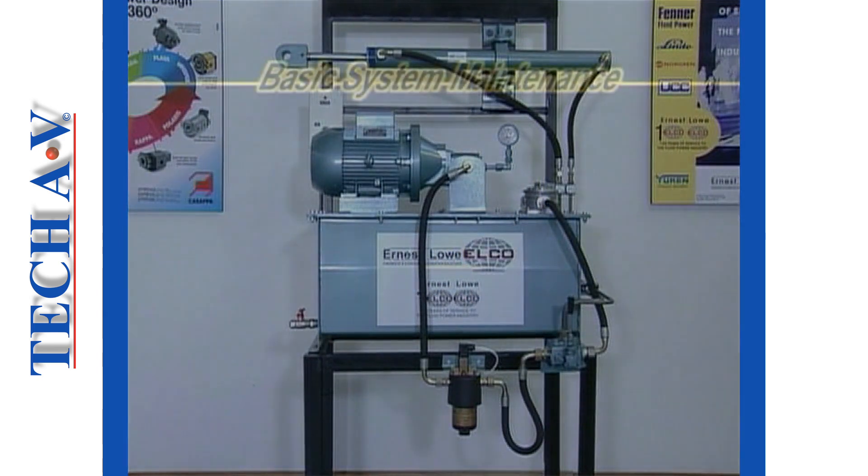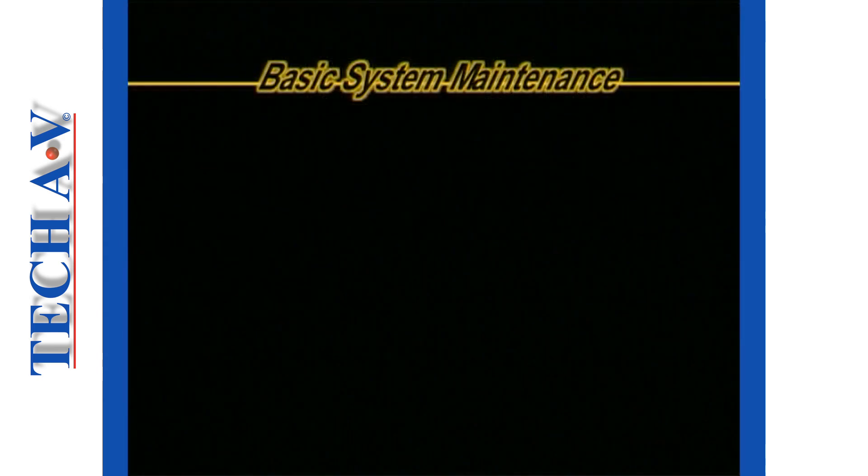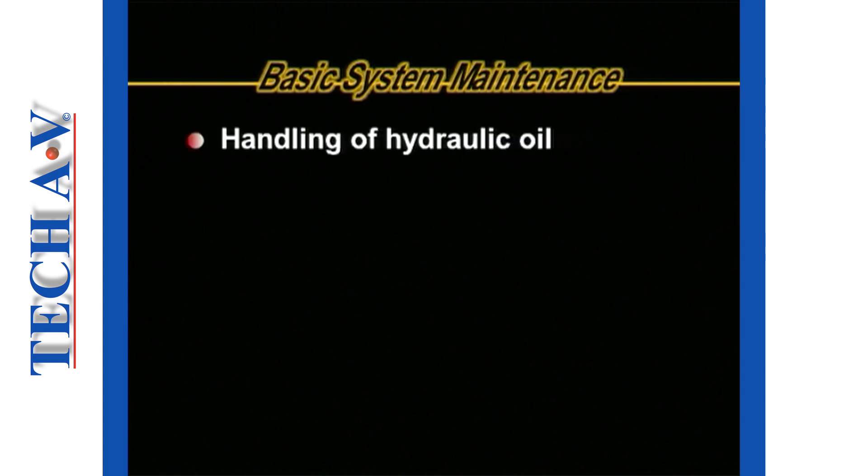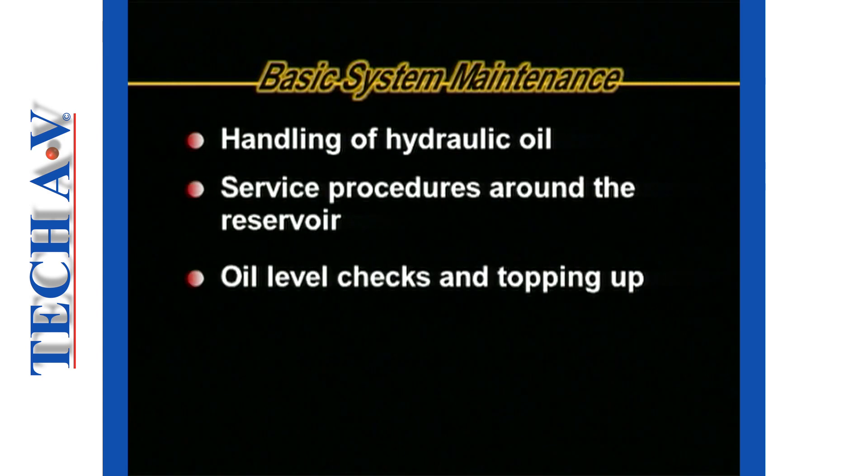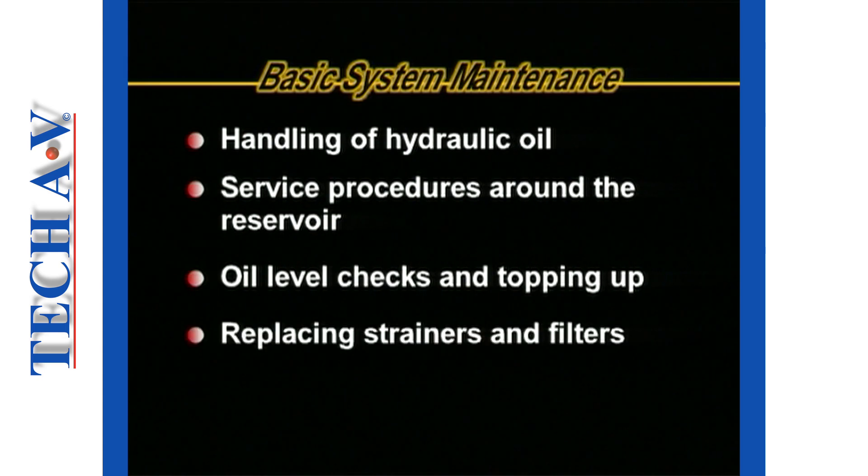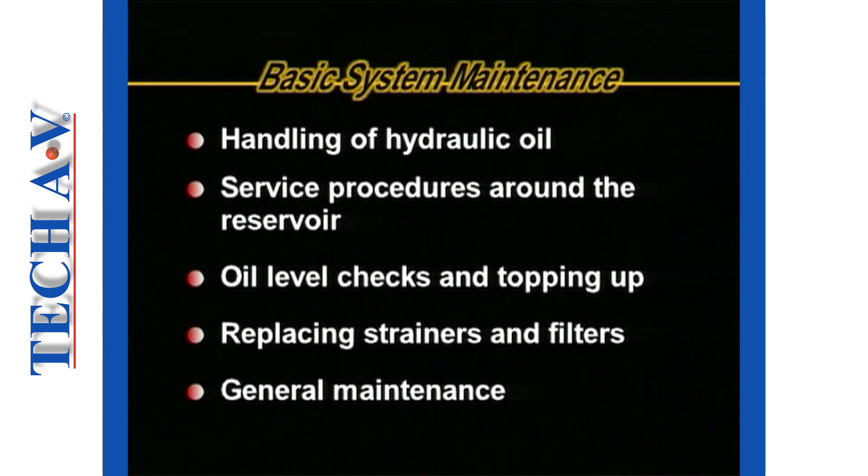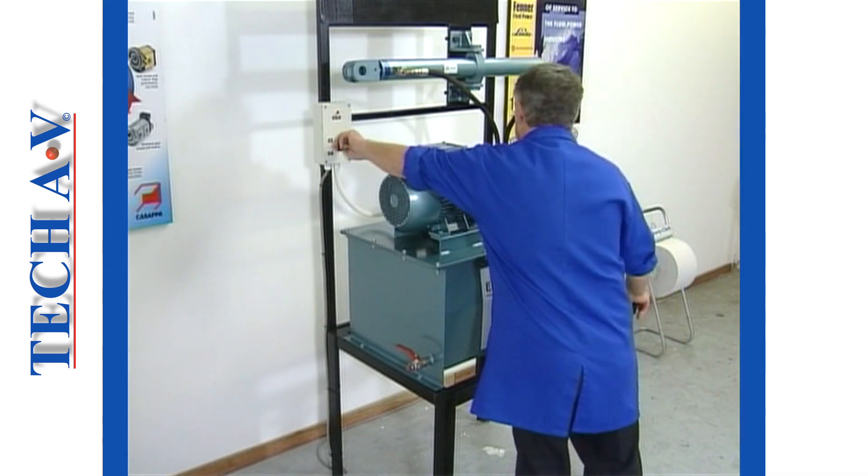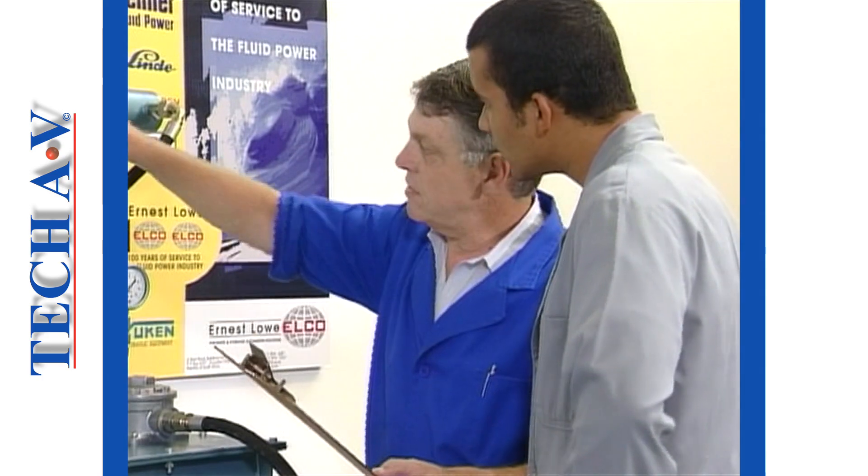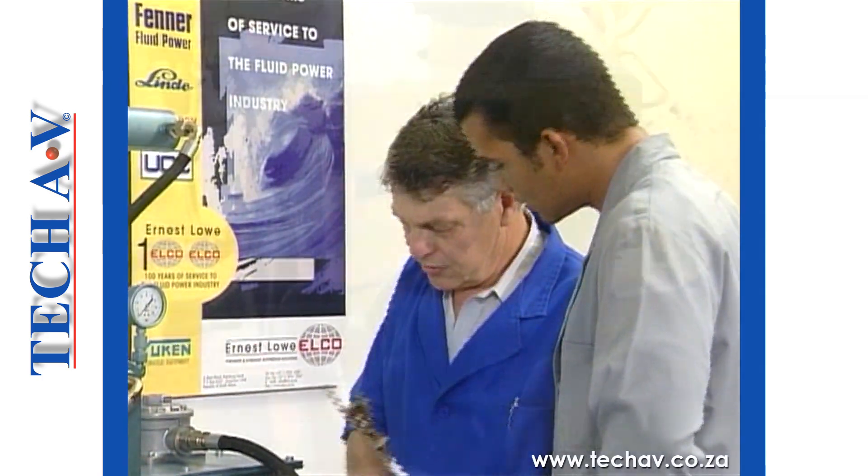We have now covered the primary aspects involved in basic systems maintenance. Namely, the correct and safe handling of hydraulic oil, service procedures around the reservoir, oil level checks and topping up, replacing of strainers and filters, and general maintenance. This concludes Program 2 in this series. In Program 3, we shall be looking at basic troubleshooting and circuit diagrams. We'll see you next time.